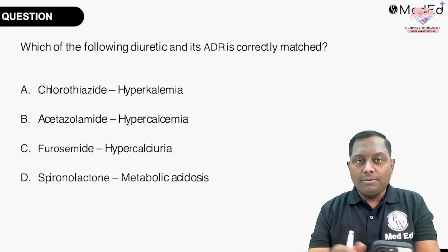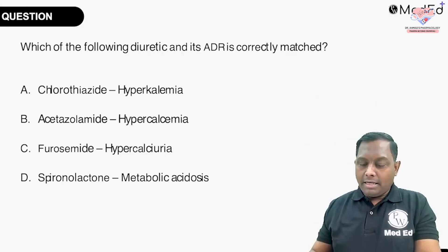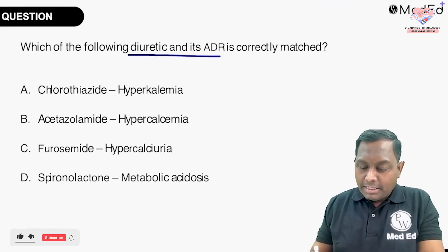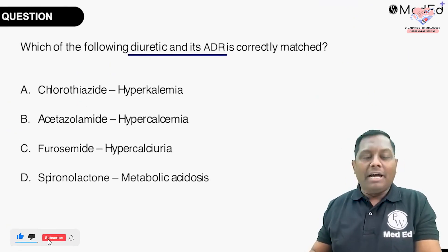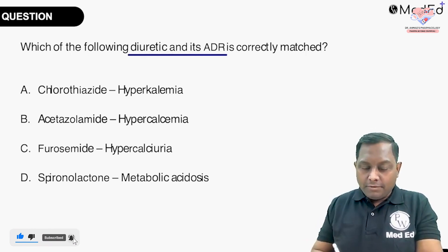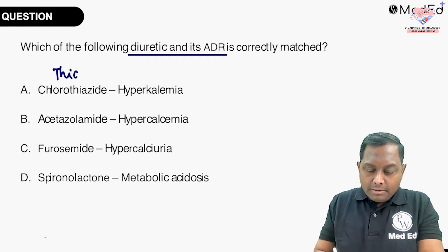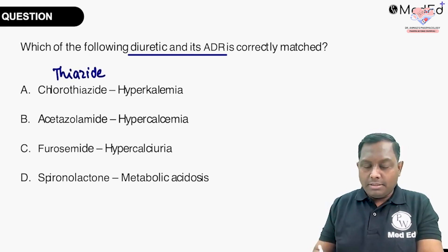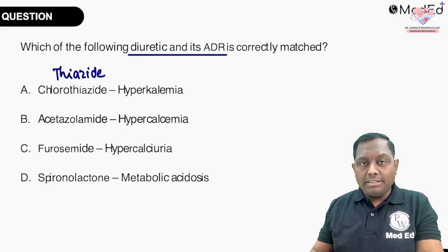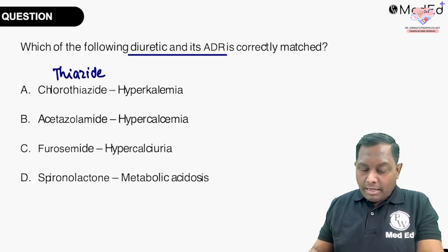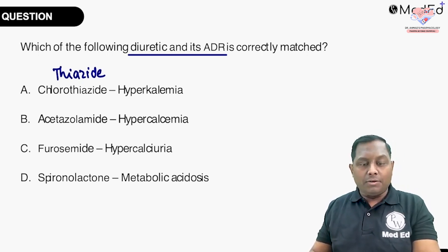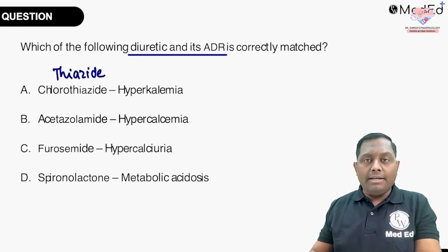First question: which of the following diuretic and ADR (adverse drug reaction) pairs is correctly matched? The options are: chlorothiazide causing hyperkalemia, acetazolamide causing hypercalcemia, furosemide causing hypercalciuria, and spironolactone causing metabolic acidosis.